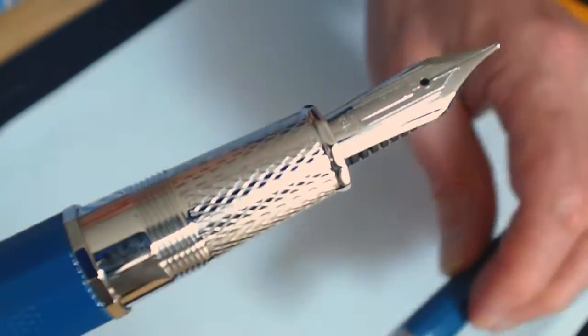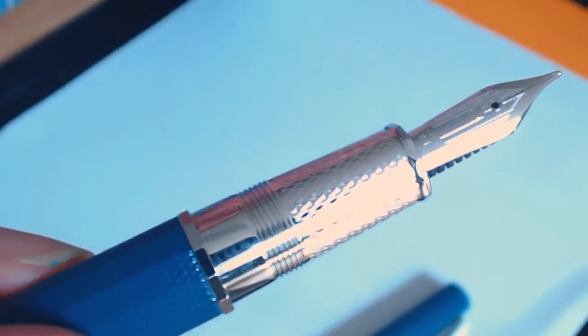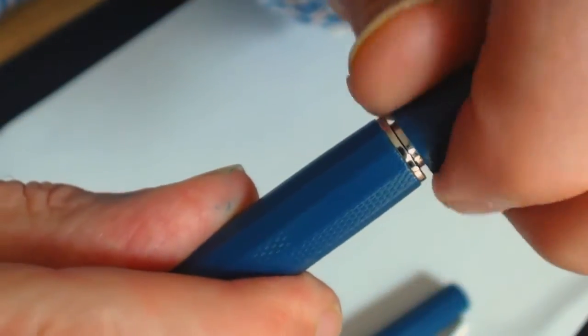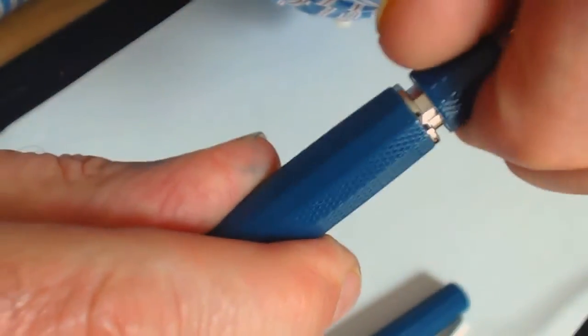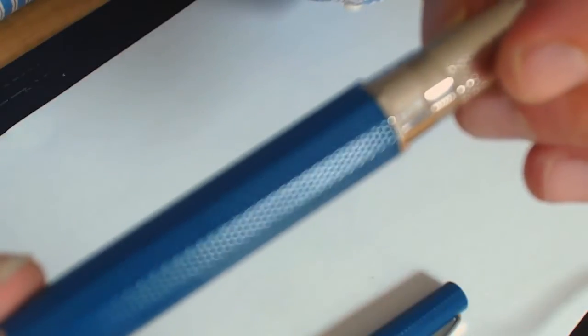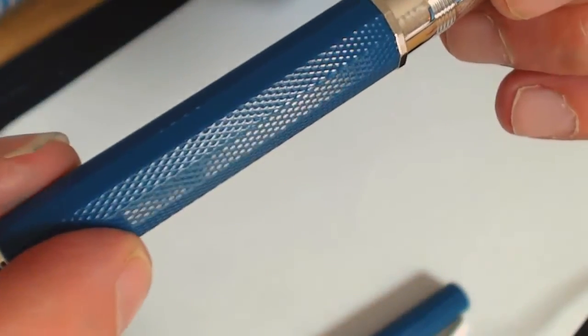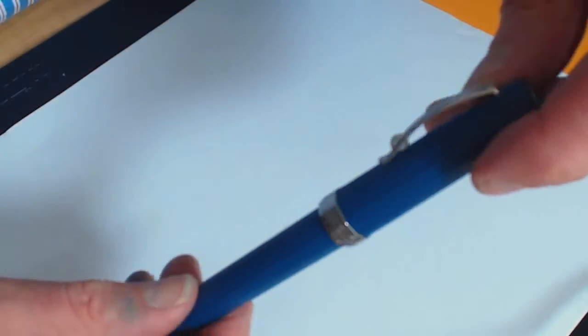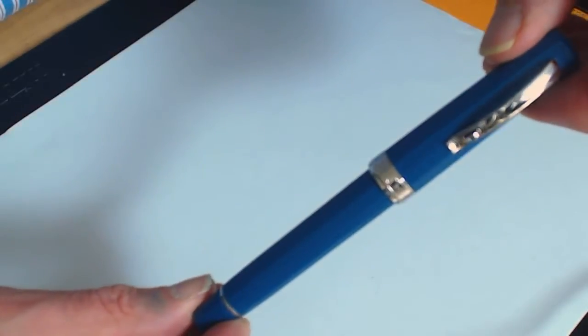The other thing that distinguishes this from virtually all other Milords, apart from the celluloid one, is that it is a piston filler. A system we all like best, I suspect. And this one will take significantly more ink than a standard cartridge. So well worth going for. And there are many of us who think that a fountain pen ideally should be a piston filler, if you can afford that.